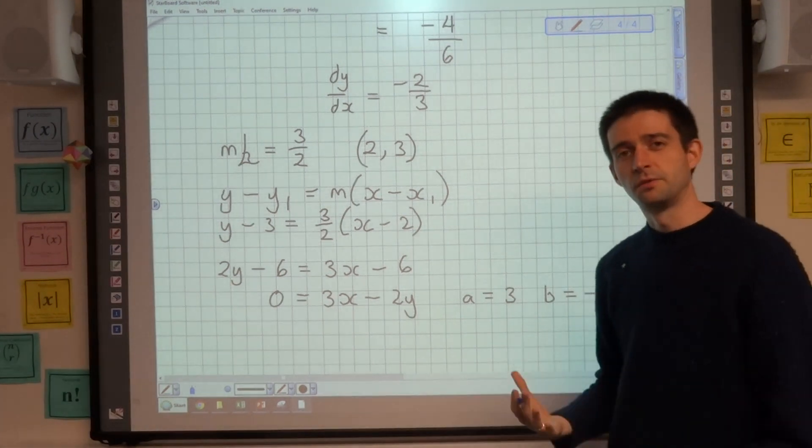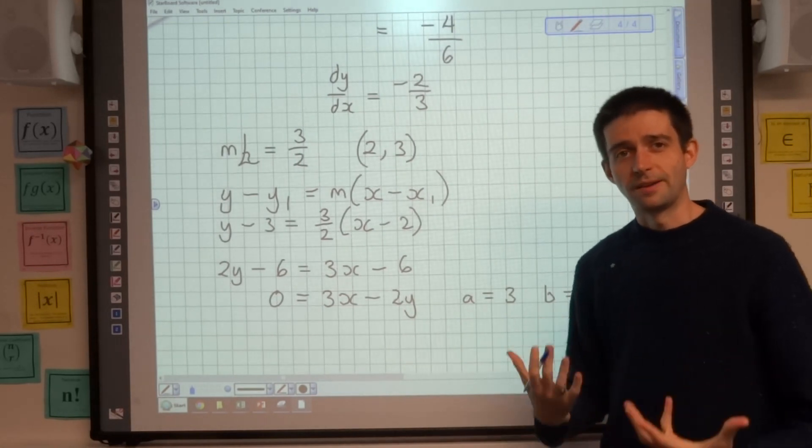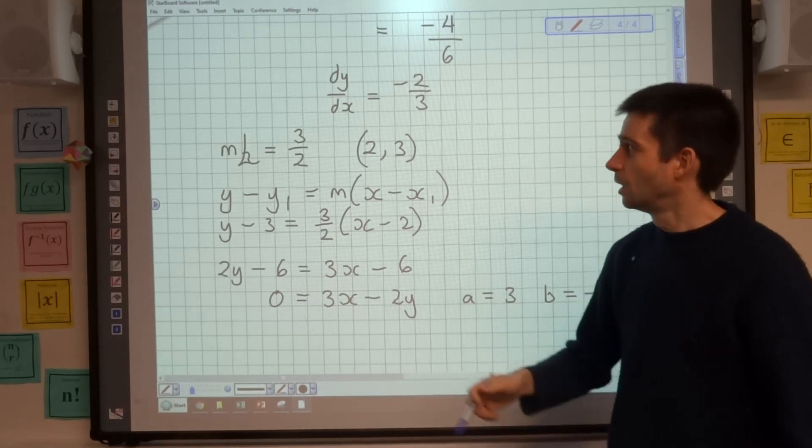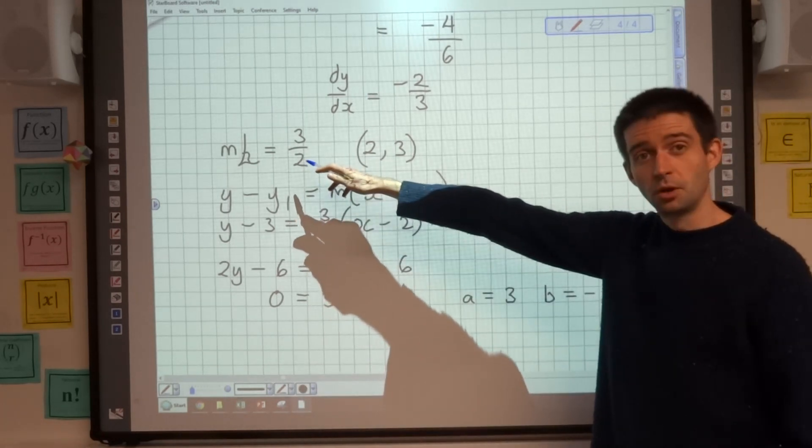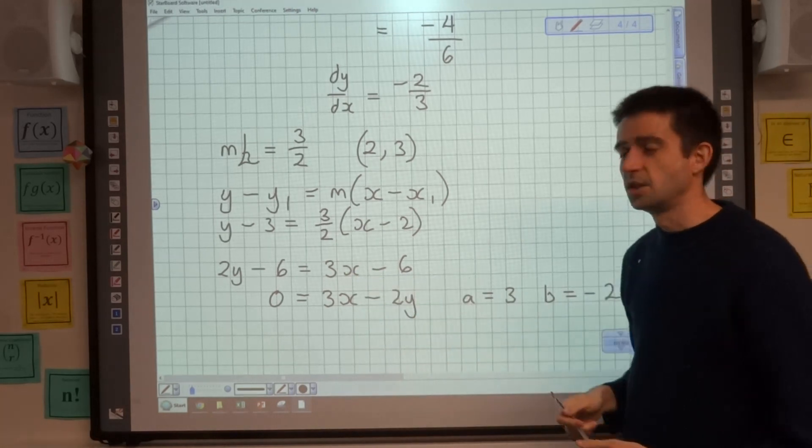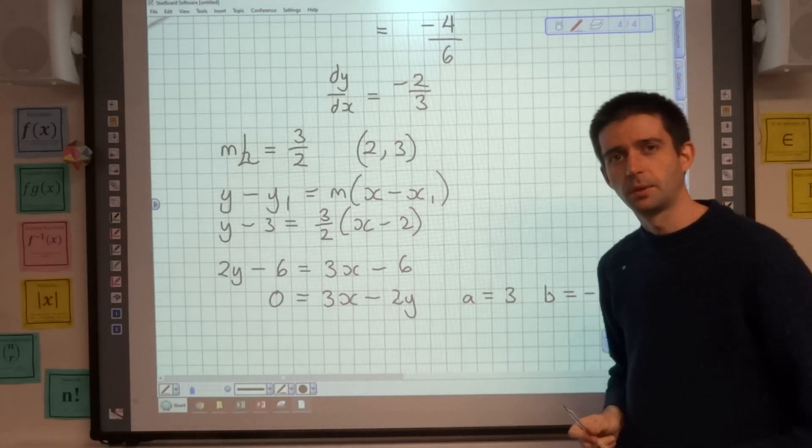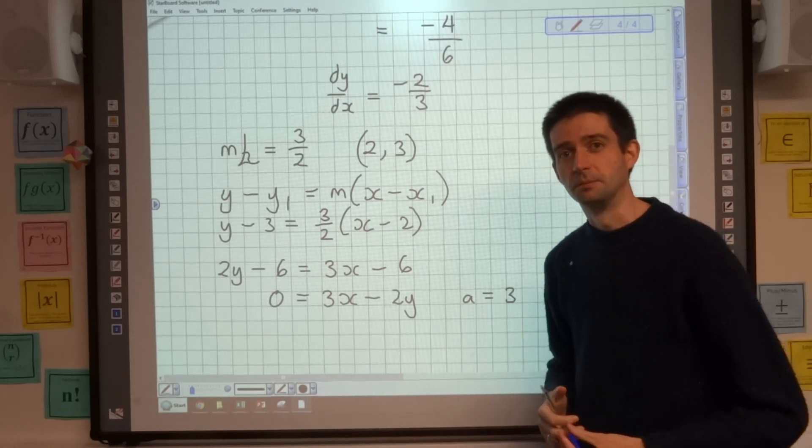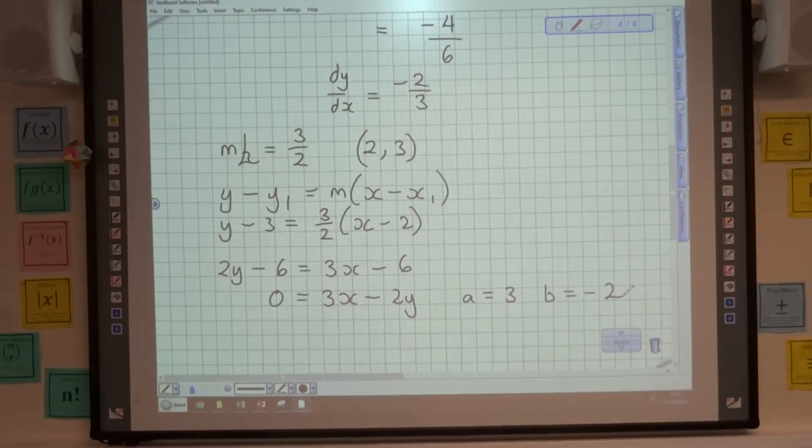So there we go. I was asked to find the equation of a normal. I found dy/dx in terms of both x and y, substituted in my coordinate, remembering to take the negative reciprocal for a normal and put it into the general equation for a straight line. Join me in the next video where I'll be looking at turning points of this type of function. Thank you.